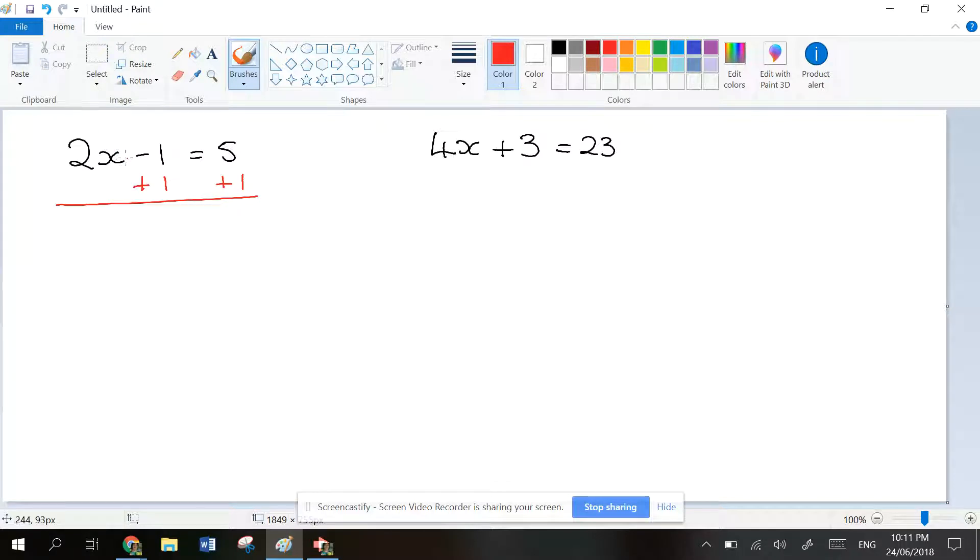That means that on the left-hand side, you've got 2x minus 1 plus 1, which will leave you just with 2x. Now let's look at the right-hand side. 5 plus 1 gives you 6. So that gives us a new equation, which is 2x equals 6.